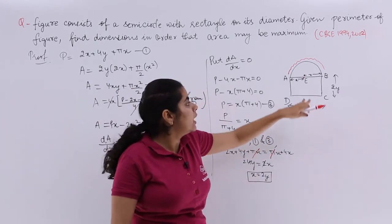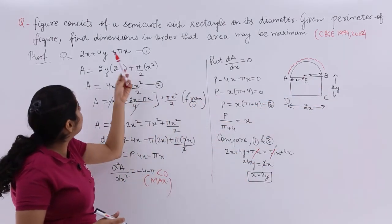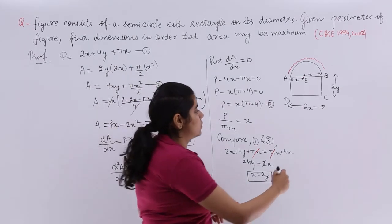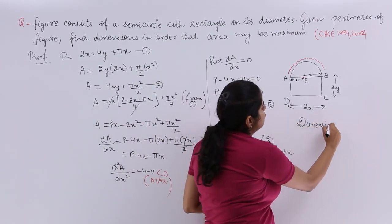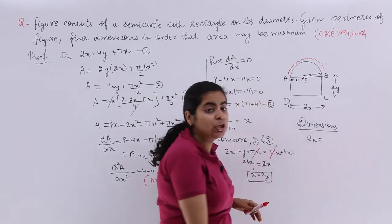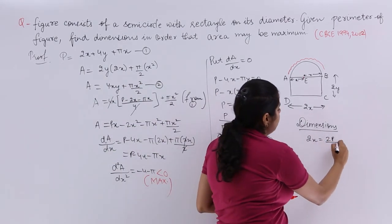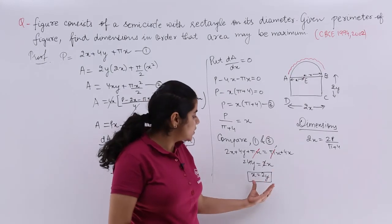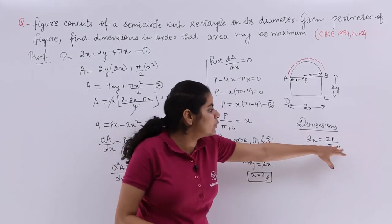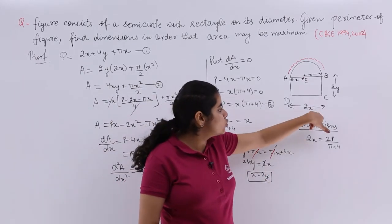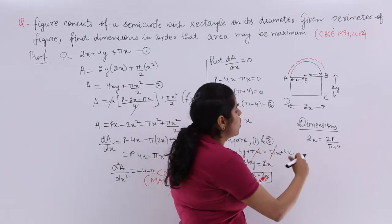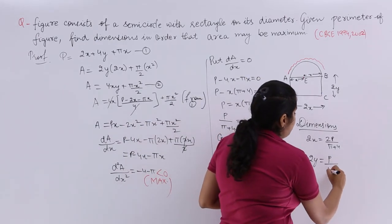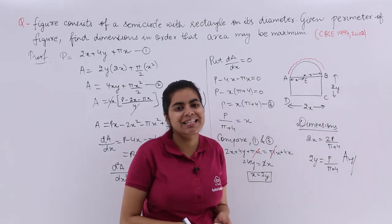Let us see the question again. You have to find out the dimensions. So the dimensions are what we are going to see. The first dimension is 2x and 2x is nothing but 2P upon π plus 4. The next dimension is 2y. So now I know that x is equal to 2y and I know that 2x is equal to 2P upon π plus 4. We need to find out the dimensions. So 2x is one dimension, 2y is the other dimension. What is 2y you need to see. 2y is nothing but x and x is equal to P upon π plus 4. So these are the dimensions and hence this is my answer.